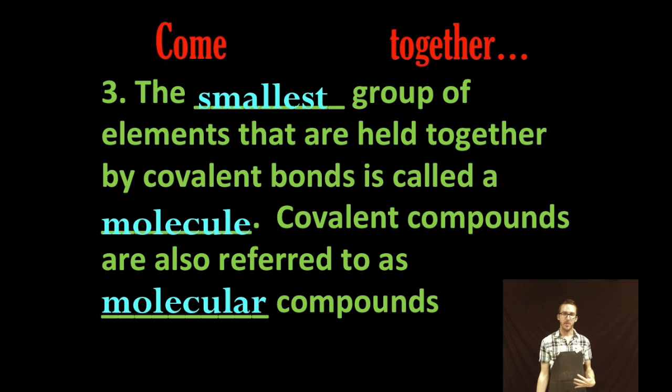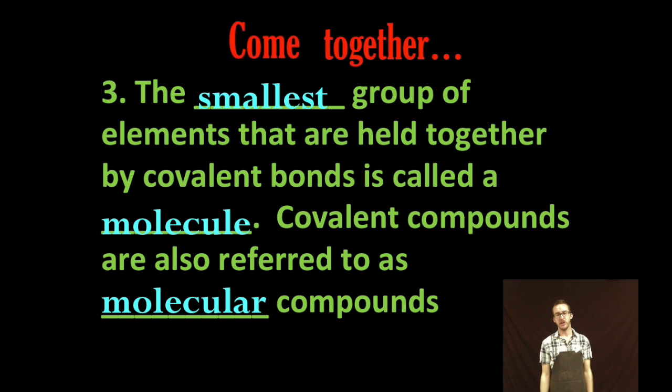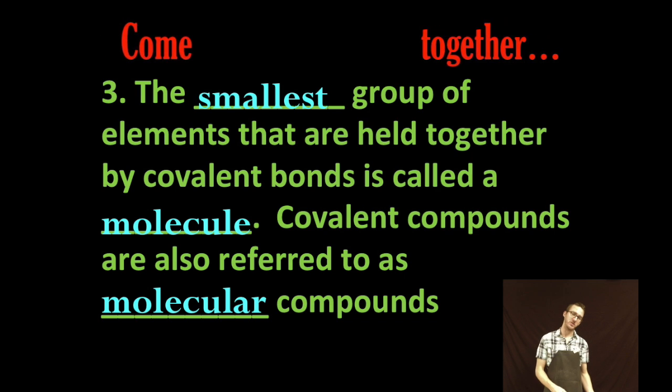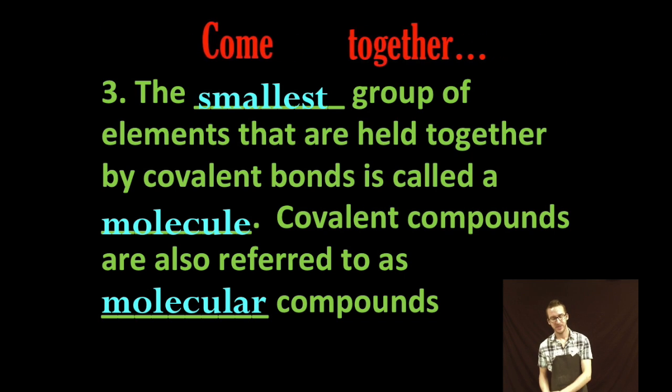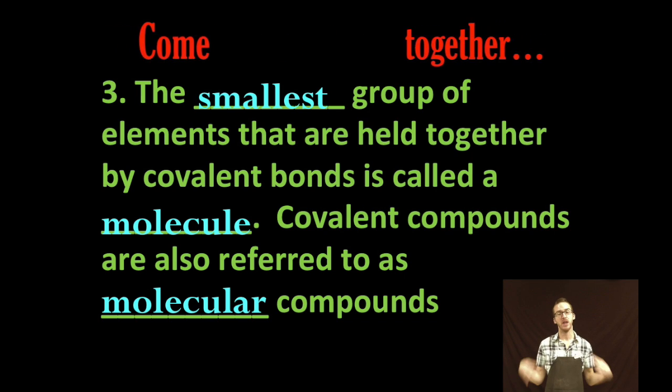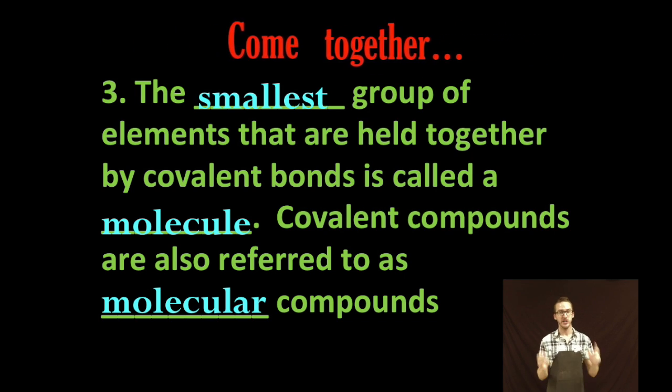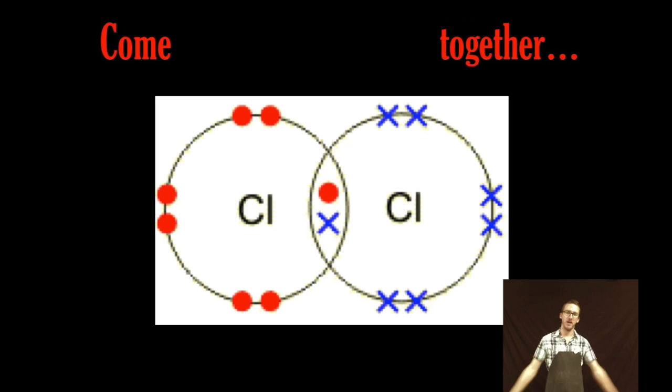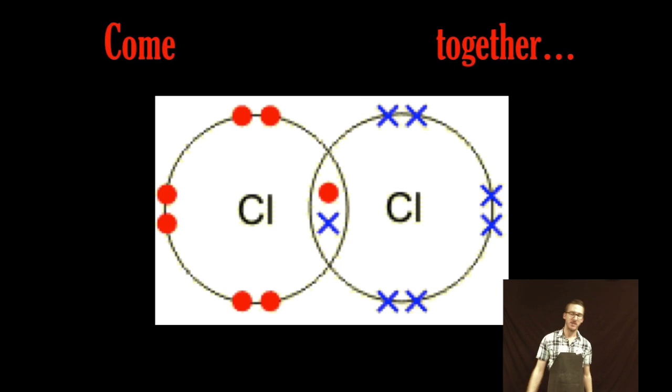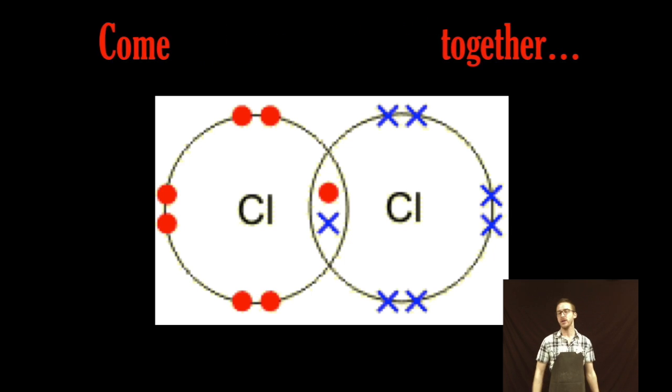Now with covalent compounds, the smallest group of elements that are held together by covalent bonds we call a molecule. So covalent compounds are also referred to as molecular compounds. Those are synonymous. Molecular compound, covalent compound, they mean the same thing. We're talking about two non-metals sharing their electrons. Compartiendo los electrones. So here's a great image of an atom of chlorine sharing one of its valence electrons with a neighboring atom of chlorine that's also sharing one of its valence electrons. Notice that in so doing they complete one another's valence level forming an octet of electrons.